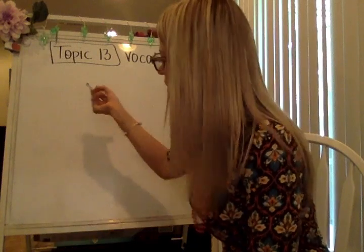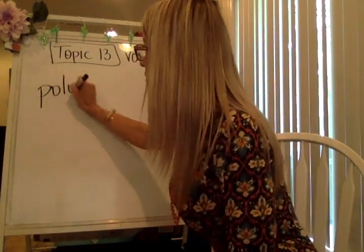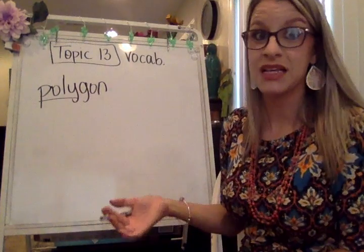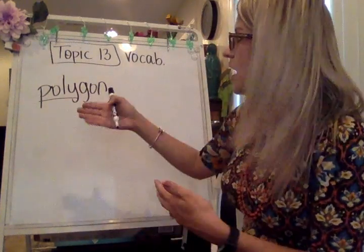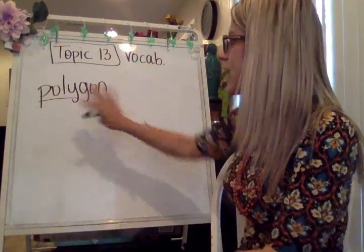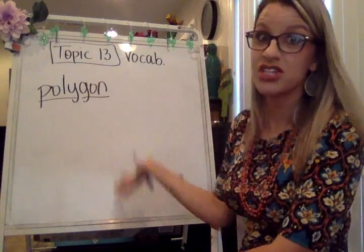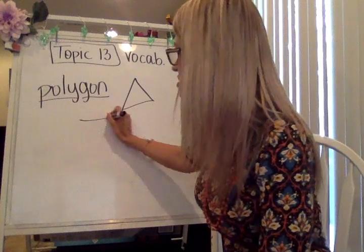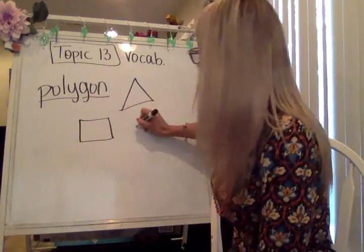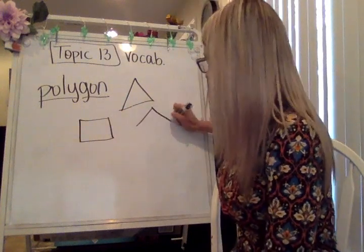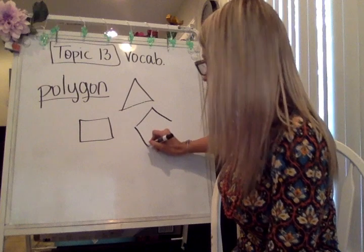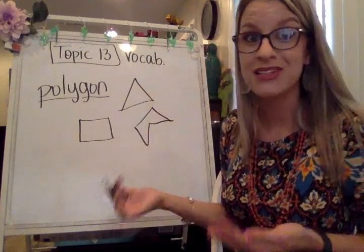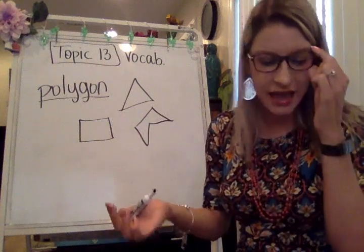The next term I want to discuss is polygon. The prefix 'poly' just means many, and the 'gon' means the shape, so polygon means a shape that has many sides. We could say all of these shapes are polygons — they have lots of different sides. I'll just make up some crazy-looking shapes; they're polygons, shapes that have a lot of different sides.